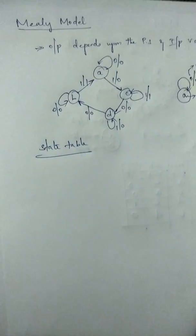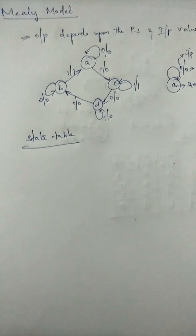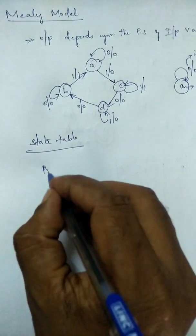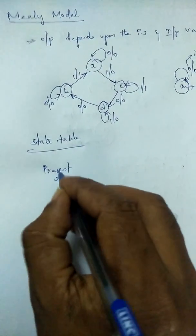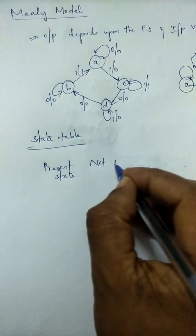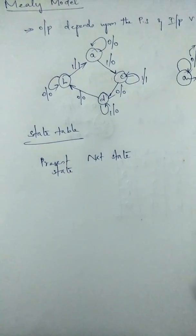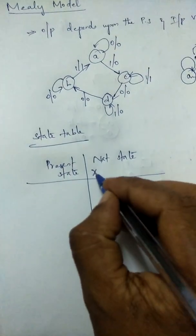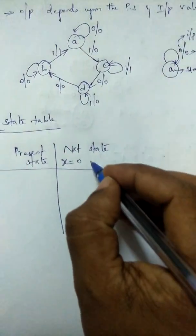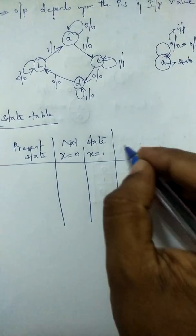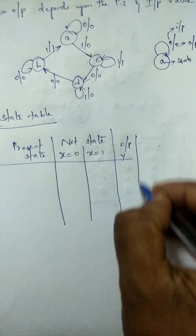We'll draw a state table for the above Mealy model. The table will have a present state, next state for two inputs — when x equals zero and when x equals one — and finally the output.